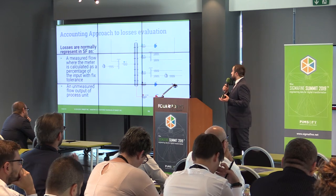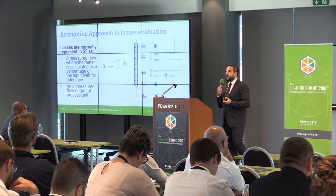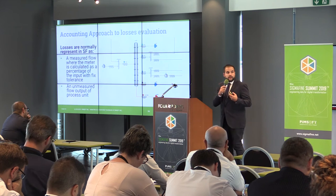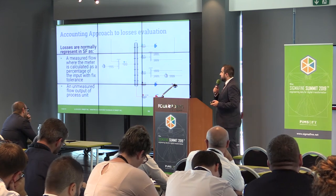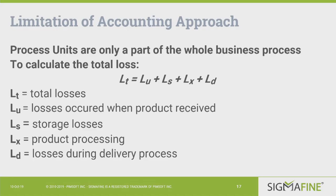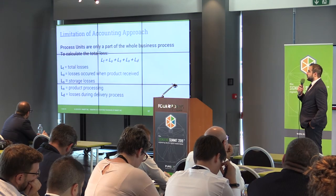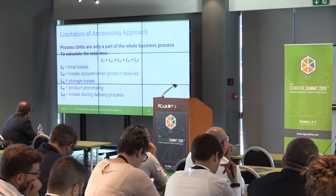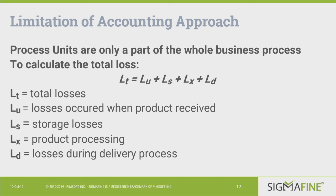These approaches are good for accounting, but we now go beyond to provide more accurate data. The first limitation is that losses are modeled only around the process unit, which is just part of total plant losses. Losses also occur when a product is received (unloading vehicles), during storage, during handling, processing or reloading, during tank maintenance and technical operations, and finally during the delivery process when loading vehicles.